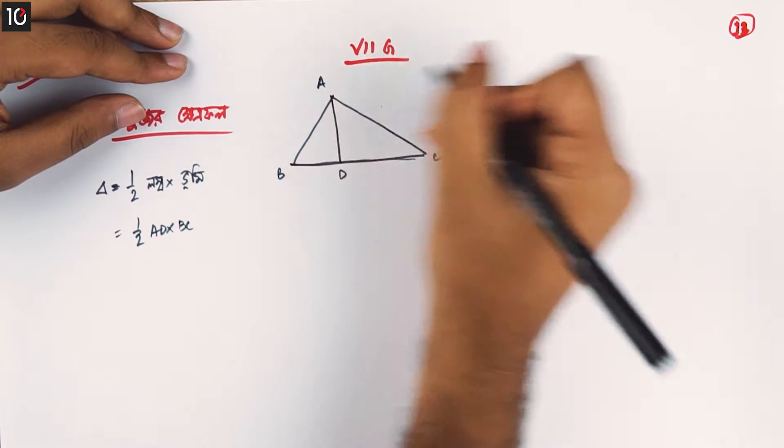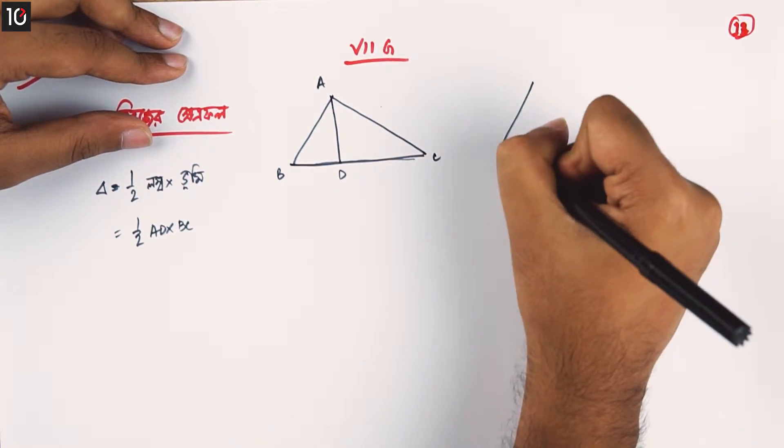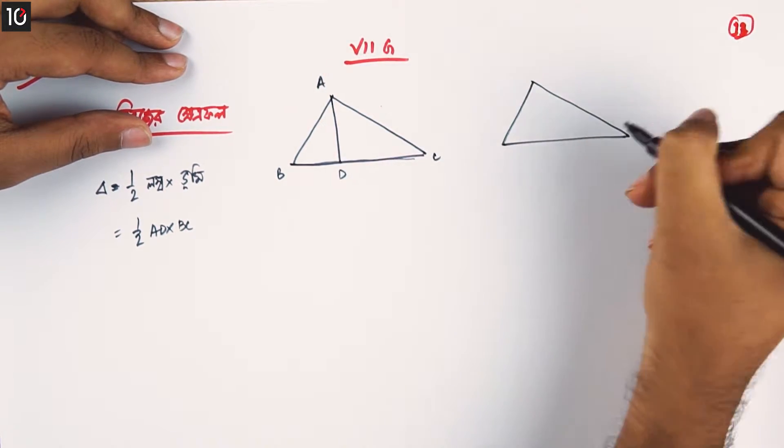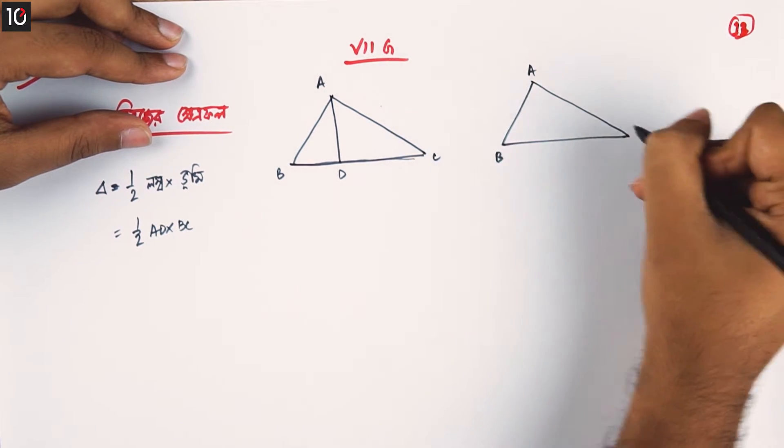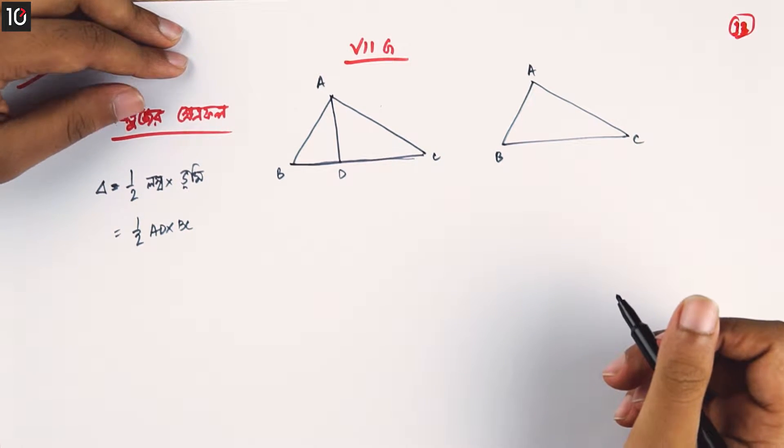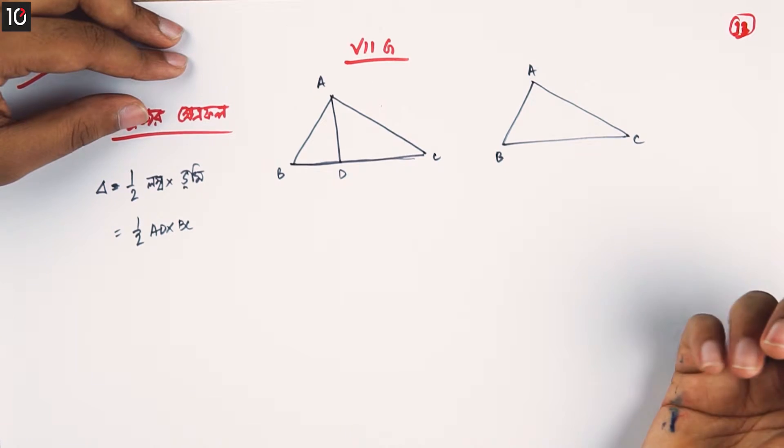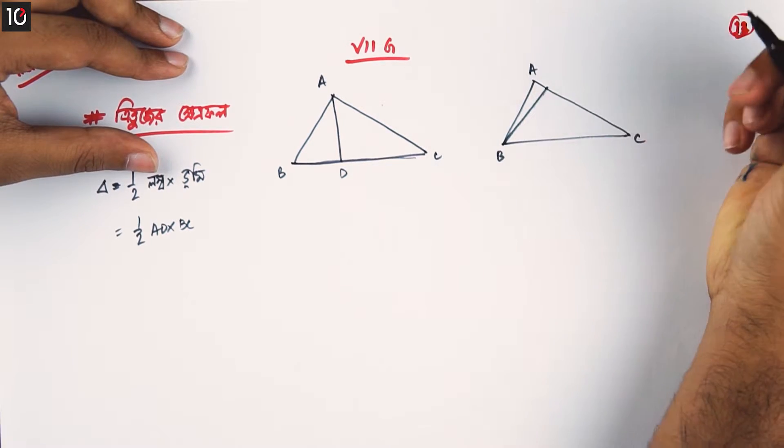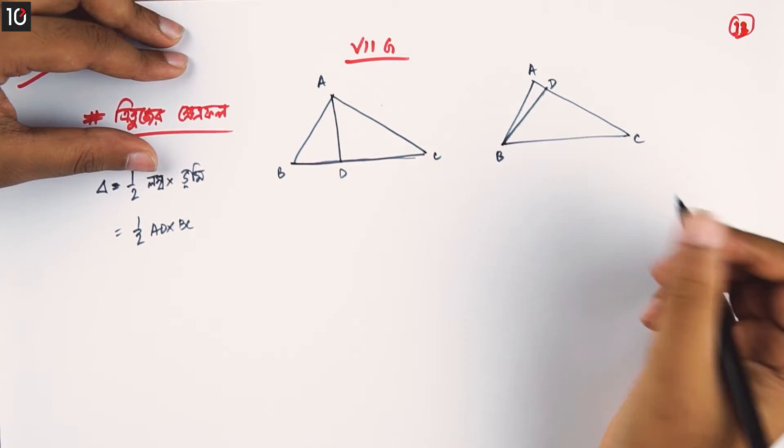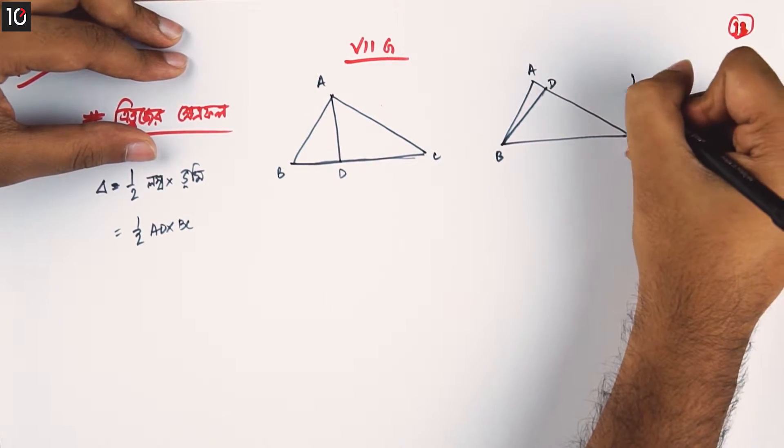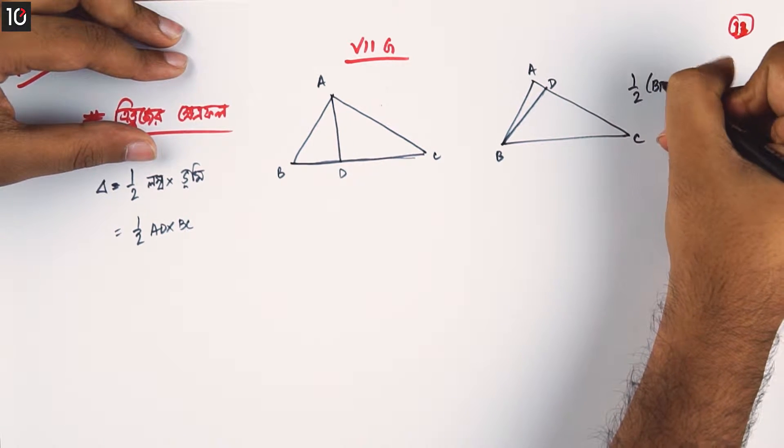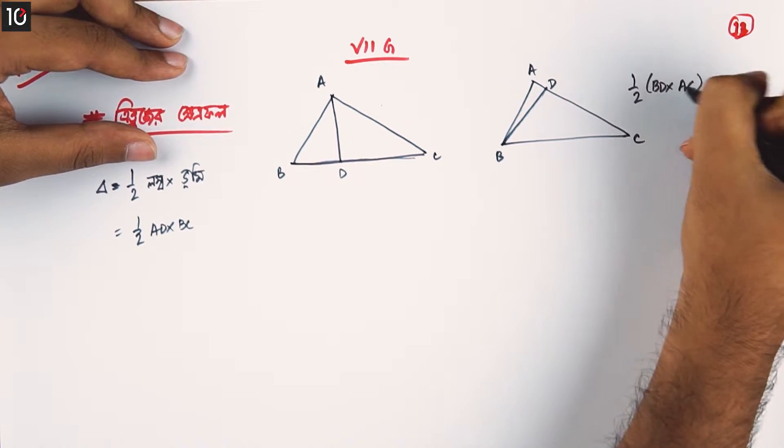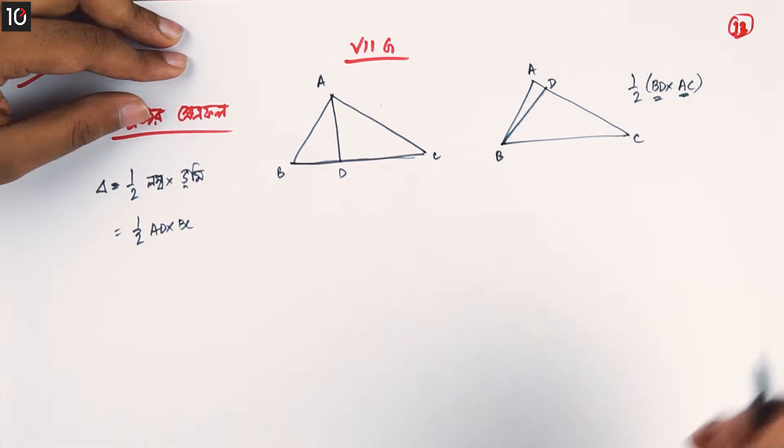We have triangle ABC, but we have to do this. We don't have D as the perpendicular. So what we do is half BD into AC. This is lomba and BD.